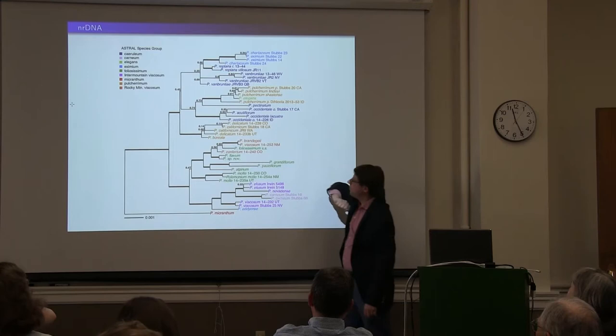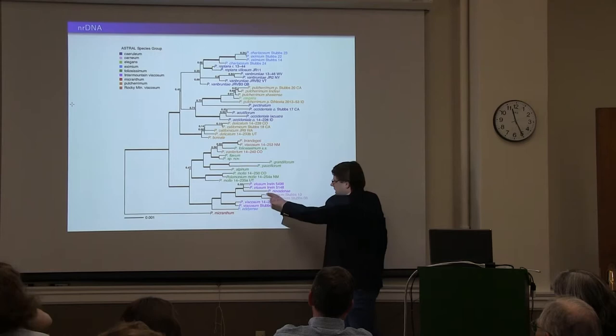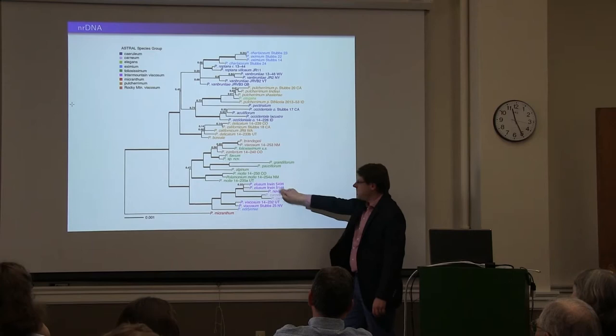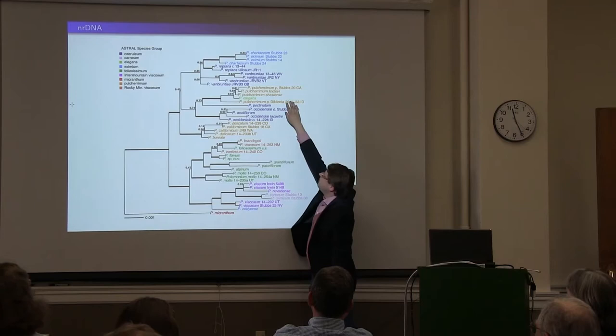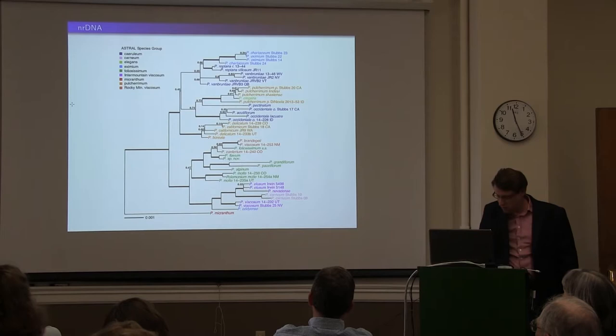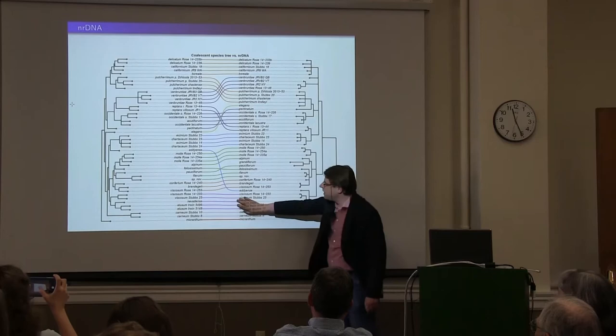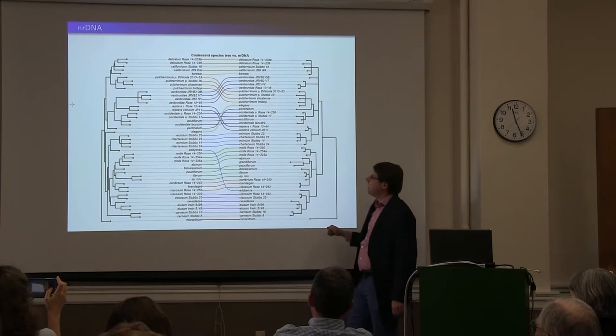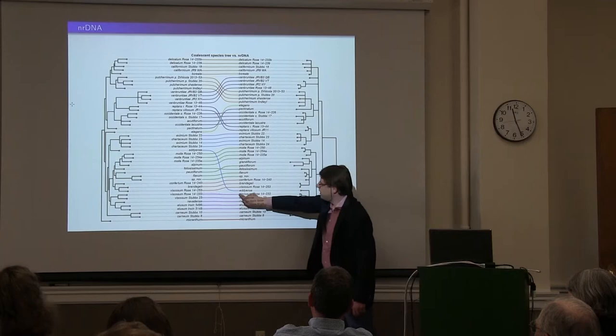One interesting, well-supported discordance is carneum embedded in this lineage and the elusum-valensii lineage — this valensii here is sister to this dark purple lineage, whereas in our coalescent tree it is sister to the other species at the top. These links connect identical accessions between the coalescent tree on the left and the nuclear ribosomal tree on the right, especially showing discordance with this light blue clade.